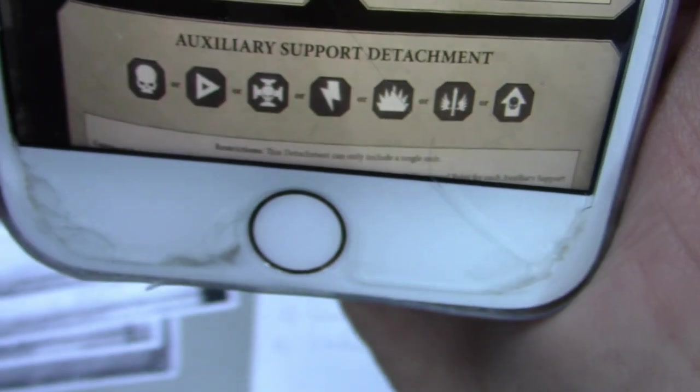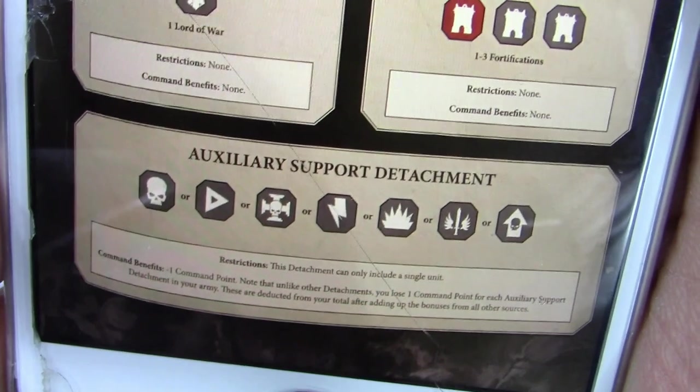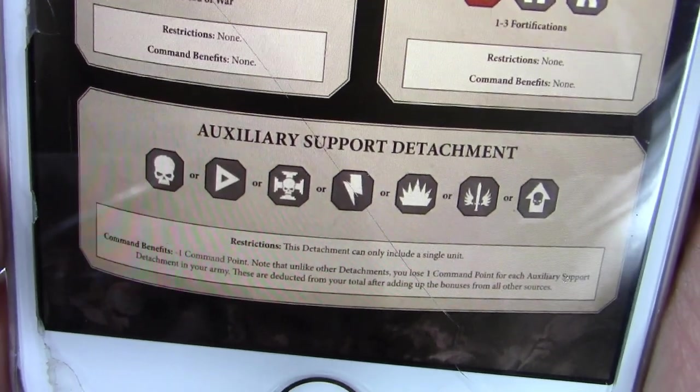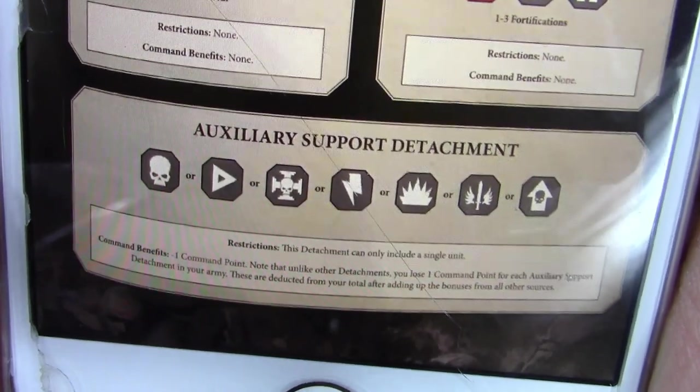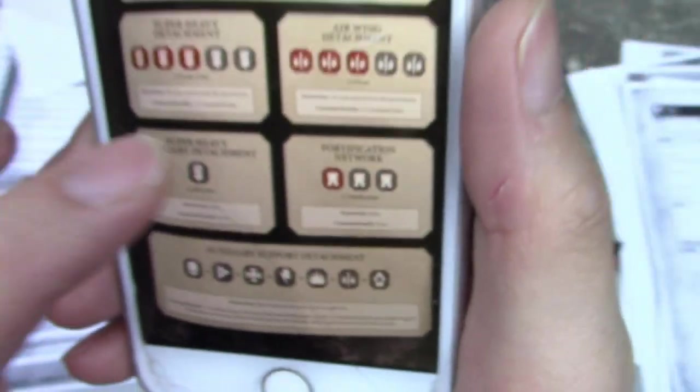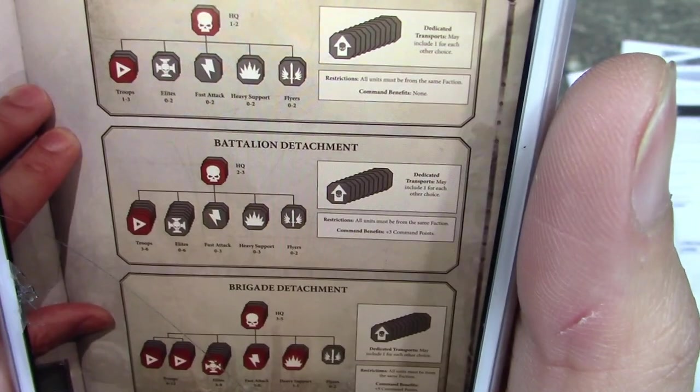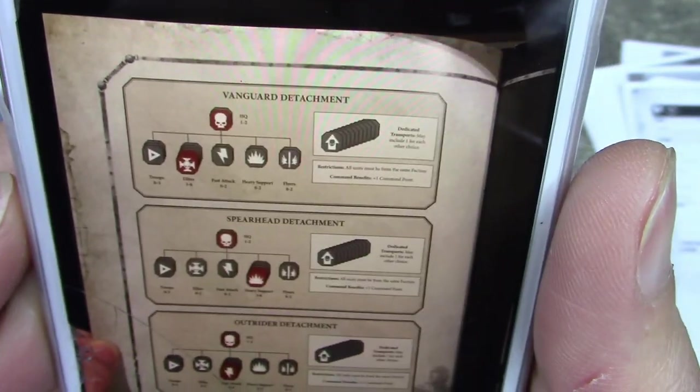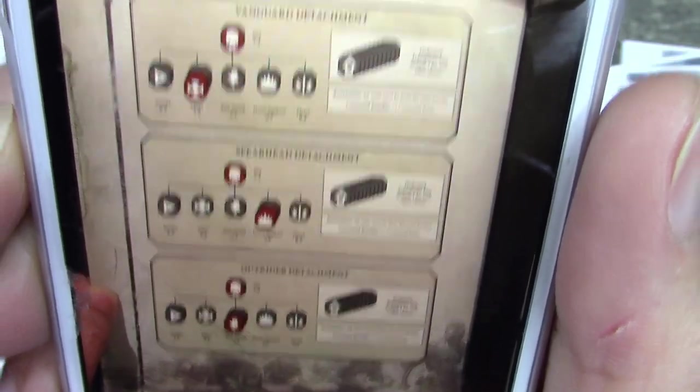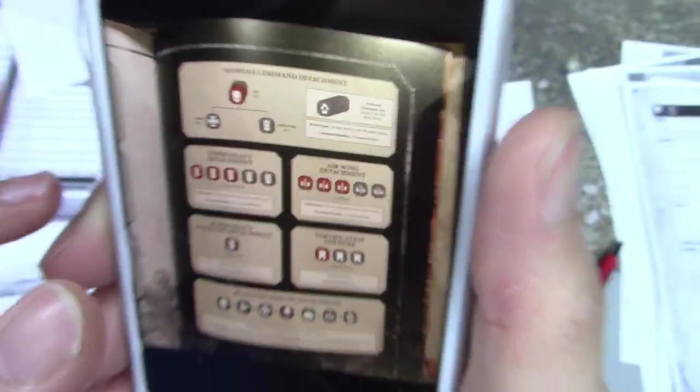And then these are the special ones. If you really need to run a lot of HQs, you run the supreme command detachment. If you're playing all knights, then you play the super heavy detachment - three to five Lords of War. If you need to splash in more than one or two flyers, you run the air wing. And if you just want to take one knight or one Lord of War, you splash in the auxiliary super heavy. The fortification network allows you to take fortification. The auxiliary support detachment allows you to take one unit from any slot, but you lose a command point for doing that.